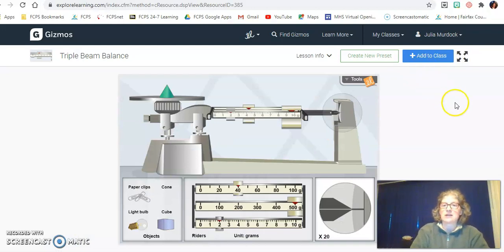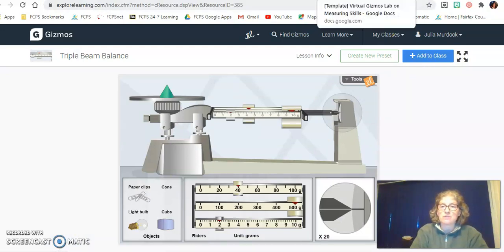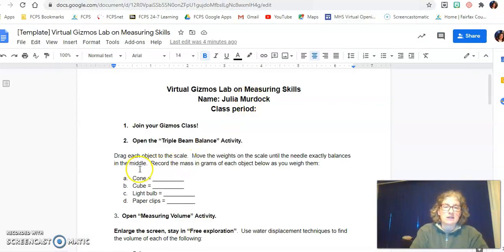So now I'm going to press escape and get out of that screen and go back to my virtual. It said to drag the cone over so I would put 542 grams as my answer to number one. That's how you do that first part.